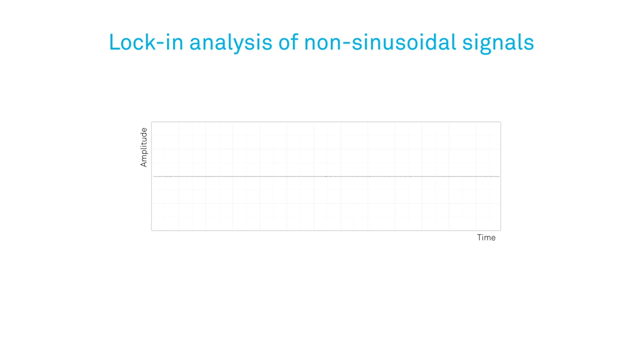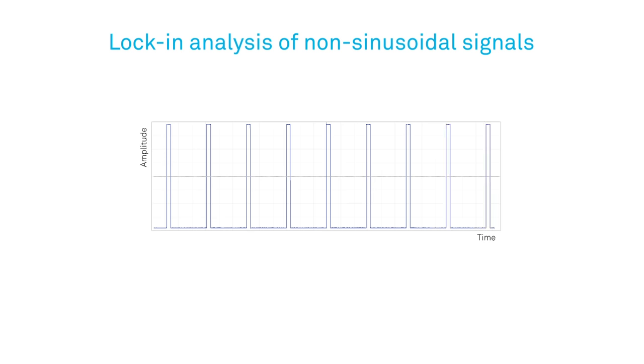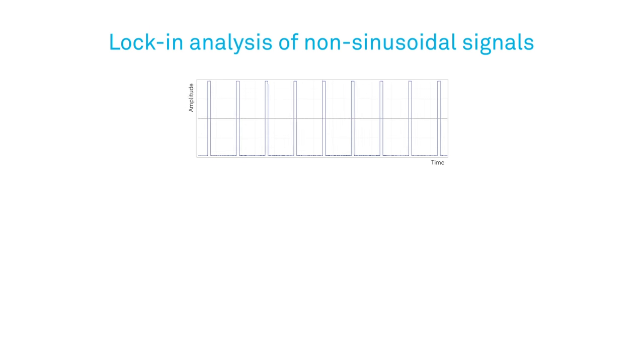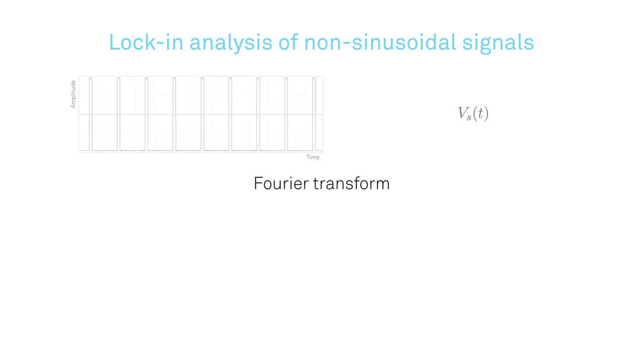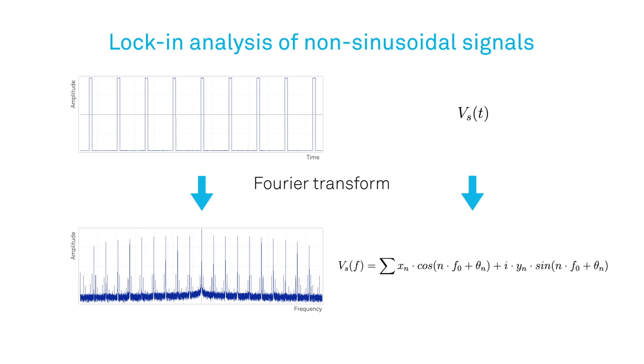In order to understand the whole demodulation process of mixing and subsequent filtering for non-sinusoidal signals, we can make use of the Fourier theorem. It states that every periodic function can be expanded as an infinite sum of linear independent functions of sine and cosine terms.